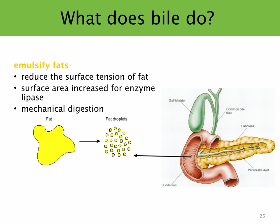The second thing bile does is it emulsifies fats. That big yellow glob of fat gets broken down into small fat droplets — it reduces the surface tension of the fat. The surface area is therefore increased for the enzyme lipase to break down. We call this emulsification of fats mechanical digestion. The word you need to write down in your notes is lipase — the surface area is increased for the enzyme lipase.